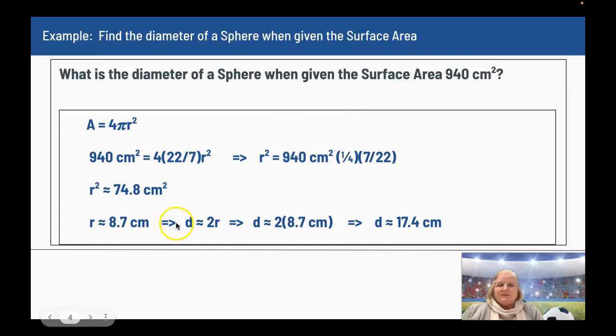So if the diameter is equal to 2 times the radius, and I know my radius is 8.7 centimeters, my diameter is equal to approximately 2 times 8.7 centimeters, which is 17.4 centimeters. So my diameter is approximately 17.4 centimeters.